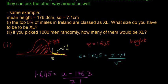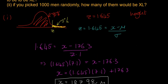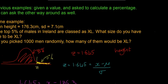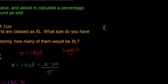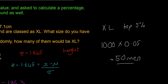And then if you picked a thousand men randomly, how many of them would be XL? So XL means the top 5%. So if we picked a thousand men, only 5% of them would be XL. And so 5% in decimal is 0.05. So if we want to put that as decimal, it's just going to be 50 men. 50 men is our answer for part two.